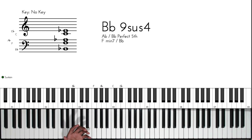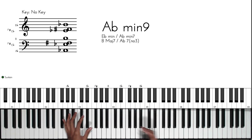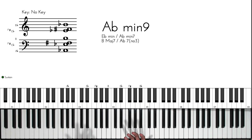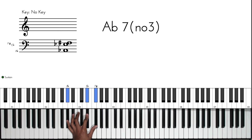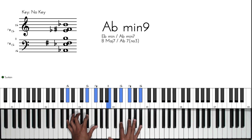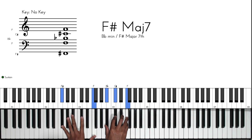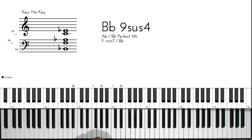For the five-one-four progression, I play an A flat minor nine for the five. Thinking about it as a combination of chords, it's a B flat major seven over an A flat seven — that's how I get this A flat minor nine. Then I play the one chord, which is a C sharp nine, and then we're back to the four, seven, three, six.